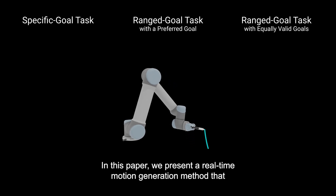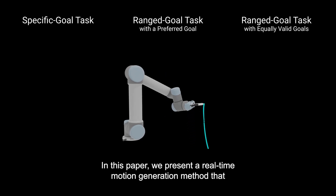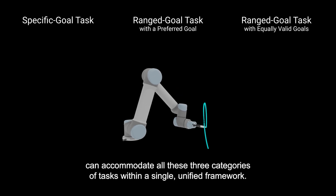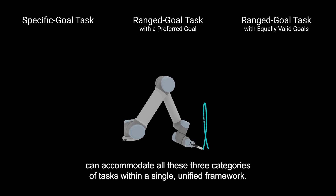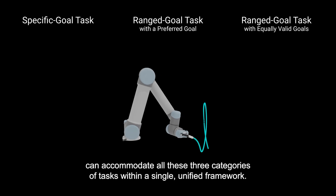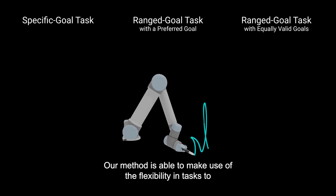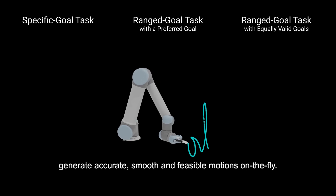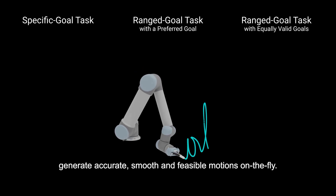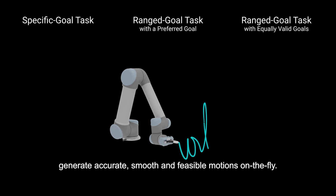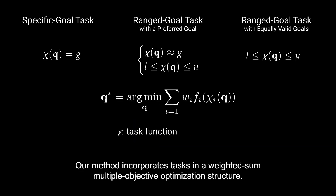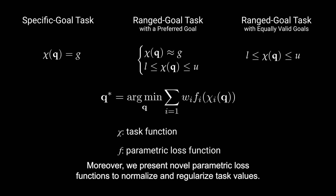In this paper, we present a real-time motion generation method that can accommodate all three categories of tasks within a single unified framework. Our method is able to make use of the flexibility in tasks to generate accurate, smooth, and feasible motions on the fly. Our method incorporates tasks in a weighted sum, multiple objective optimization structure. Moreover, we present novel parametric loss functions to normalize and regularize task values.